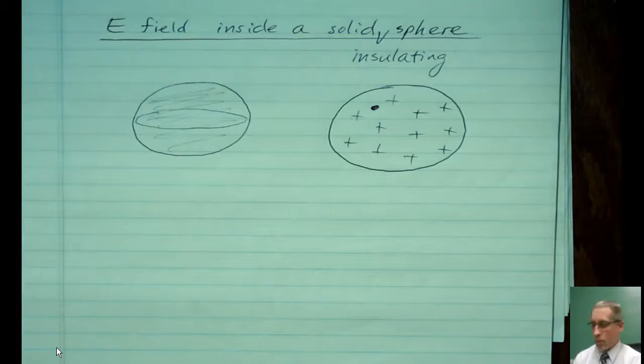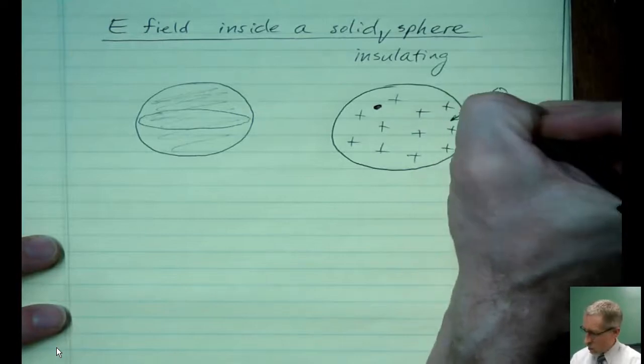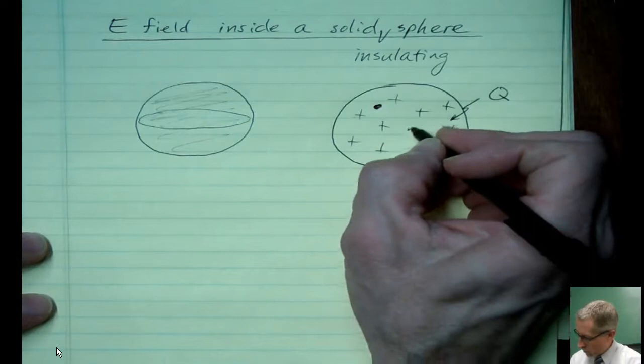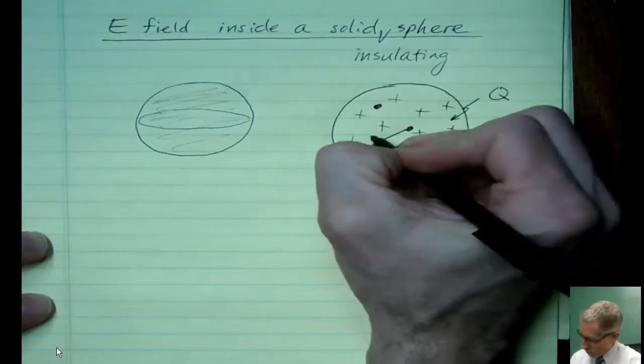And we do have to have a couple parameters here. So let's say the amount of charge on the sphere is Q. And we would also need to know the size.